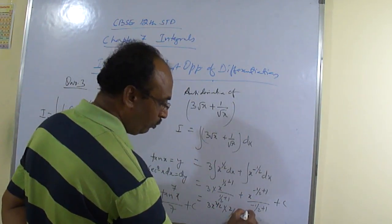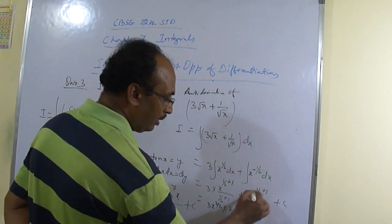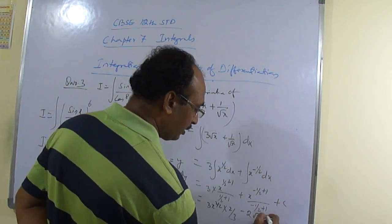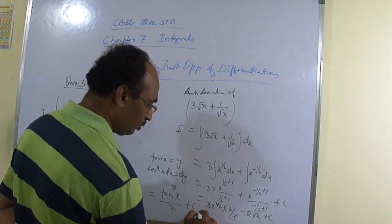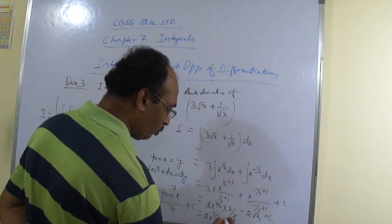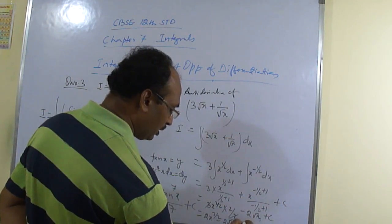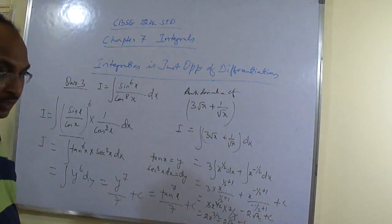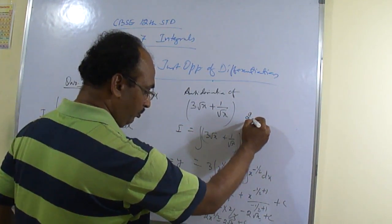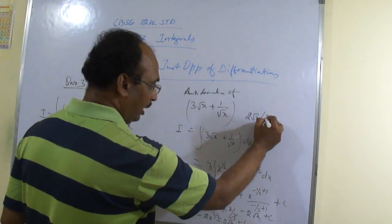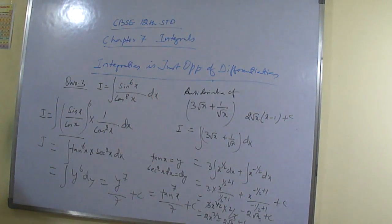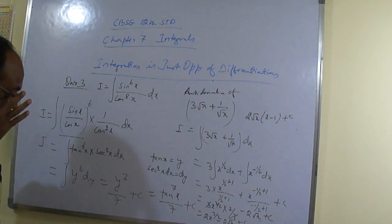So minus 1 by 2. So minus 2. And here plus 1 by 2 will be there. So root x plus c. This 3 will get cancelled. So you are getting 2 x to the power 3 by 2 and minus 2 root x plus c. So here immediately what you can do? 2 root x you can take common. And x minus 1 plus c.